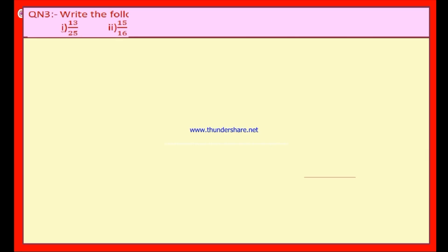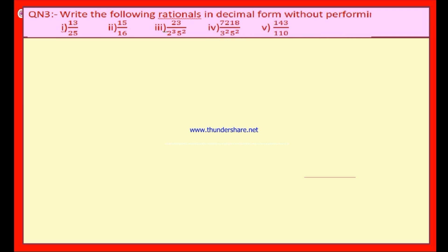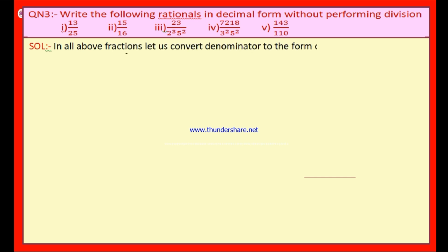Now look at question number 3: Write the following rational numbers in decimal form without performing division. In all the above fractions, let us first convert the given denominator to the form of 2 power n × 5 power m.